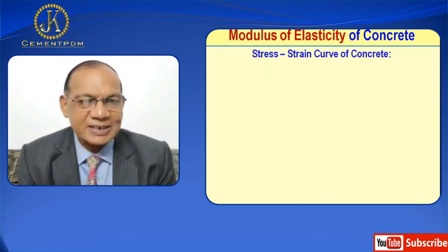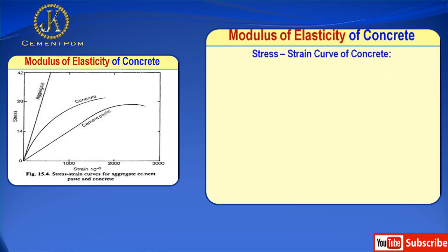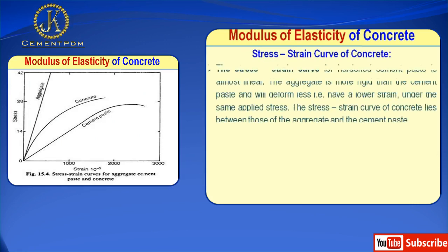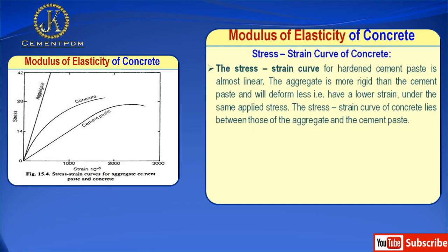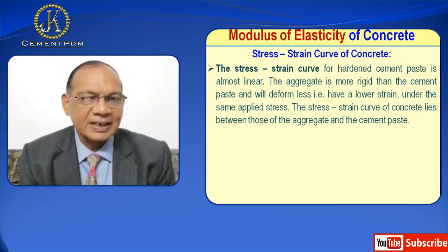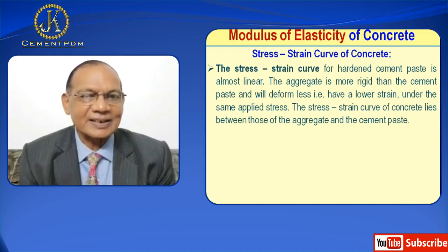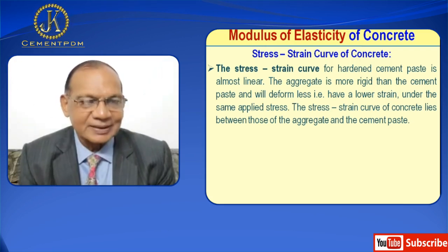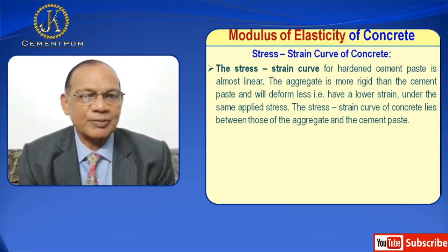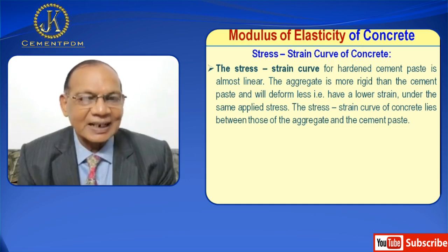Now I will discuss the stress-strain curve of concrete. The stress-strain curve for hardened cement paste is almost linear. The aggregate is more rigid than the cement paste and will deform less — that is, it has a lower strain under the same applied stress. The stress-strain curve of concrete lies between those of the aggregate and the cement paste.